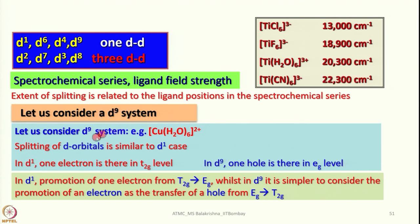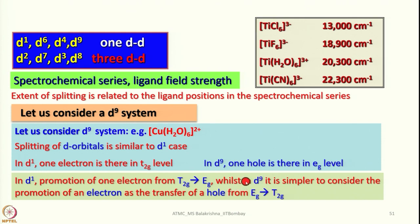Now let us consider a D9 system. A D9 system — you cannot get a better example than hexaaquacopper(2+). The splitting of D orbitals is analogous to the D1 case. In D1, one electron is in the T2G level; in D9, one hole is in the EG level. Promotion of one electron from T2G to EG in D1 is very similar to promotion of one hole from EG to T2G in D9 — when the hole moves, an electron is effectively promoted from T2G to EG.